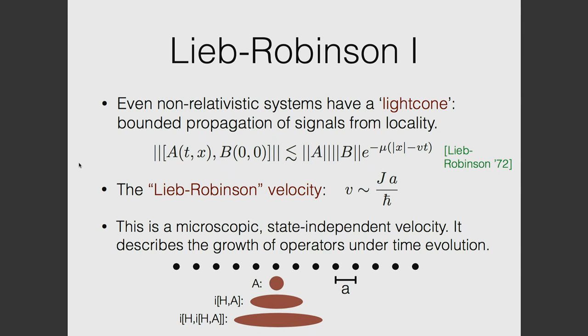The objective is to bound the diffusivity, because the diffusivity controls the conductivity. We're going to use causality. Prior to 1970, only relativists cared about causality because in special relativity there's a light cone — you can't propagate signals outside it. It turns out that non-relativistic lattice systems also have a light cone, and the velocity is called the Lieb-Robinson velocity. The statement is that the commutator of an operator at position x and time t with an operator at the origin is exponentially small if you're outside of a light cone.